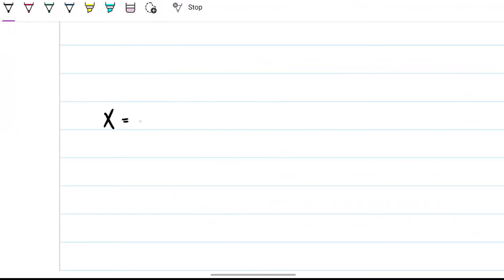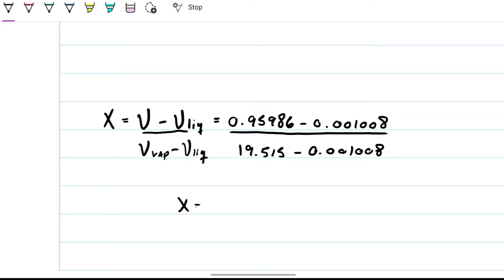We're going to have some liquid and some vapor. How to find out? Well that's simple. I can calculate my quality by doing specific volume minus specific volume of liquid, over specific volume of vapor minus specific volume of liquid. Let's go ahead and put our numbers down here. We have 0.95986 minus liquid, which is 0.00108. Over here we have the one for the vapor, this is 19.515, and here the same one, 0.00108. So my quality with those numbers turns out to be 0.04914. So let's go ahead and approximate that, that's going to be about 4.91%.